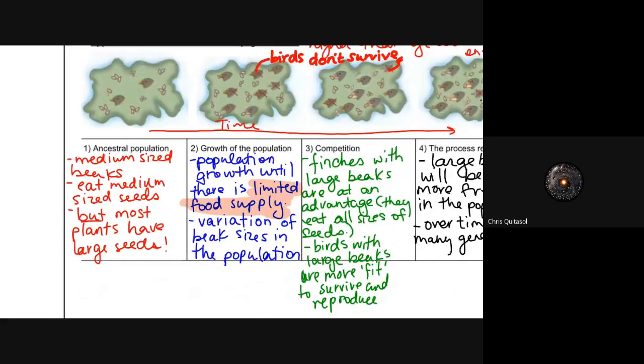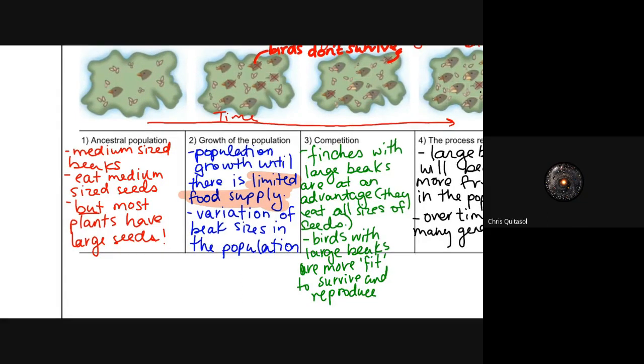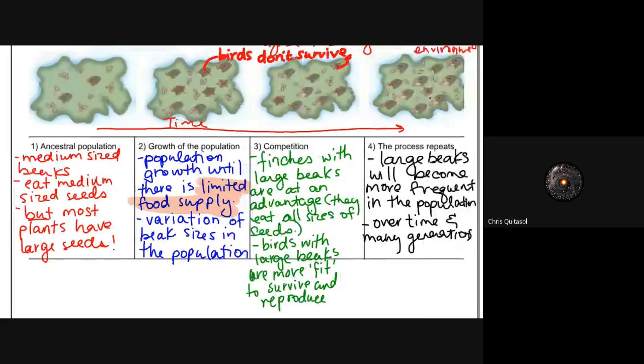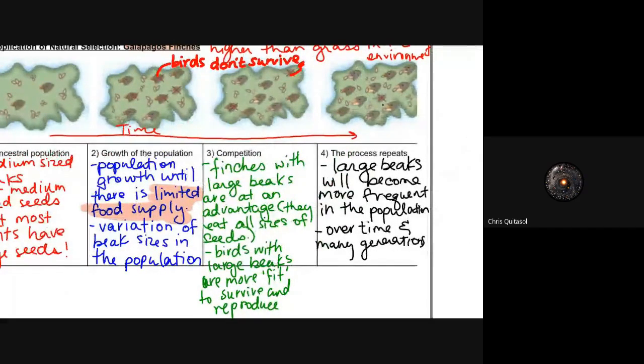Over a long period of time, there's competition. The finches with large beaks are at an advantage. They are able to eat the larger seeds. They have way more access to food, and if they have more access to food, they're likely to survive. If they're likely to survive, they're likely to pass on those genes. So birds with larger beaks are considered more fit, and they will survive and reproduce. Lastly, when we look at the process repeating itself, large beaks will become more frequent in the population over time. Over many generations, you would start to expect the population to be more representative of what the food supply provides.